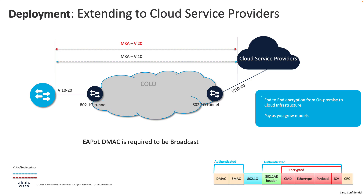One thing to keep in mind: you will need to set the E-POL destination MAC address to broadcast in order to establish secure connectivity for multiple VLANs from your on-premises environment to your cloud environment.